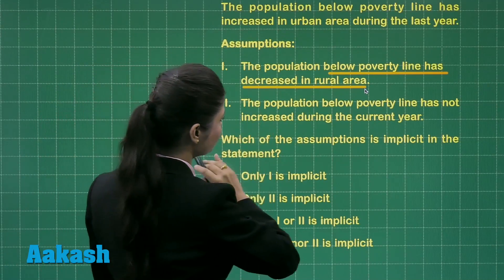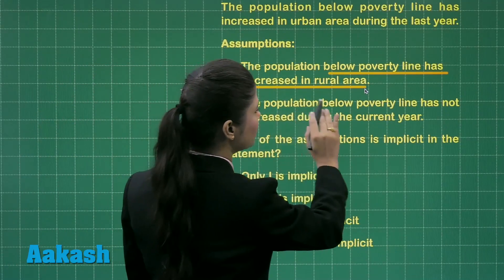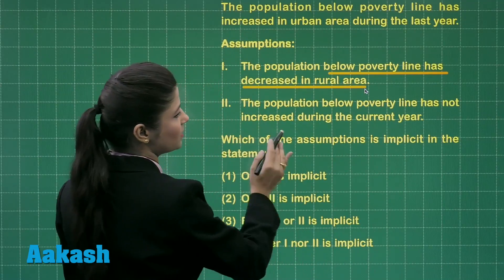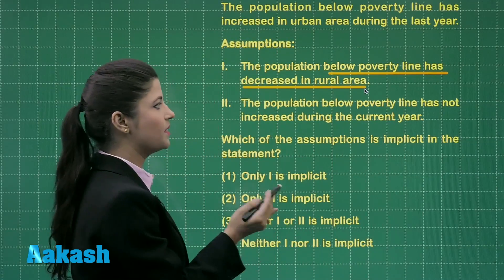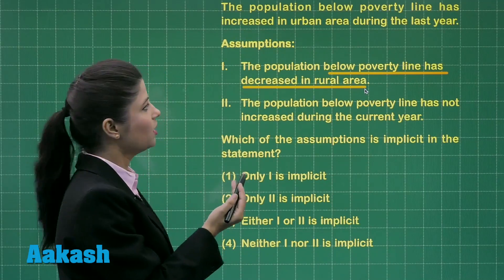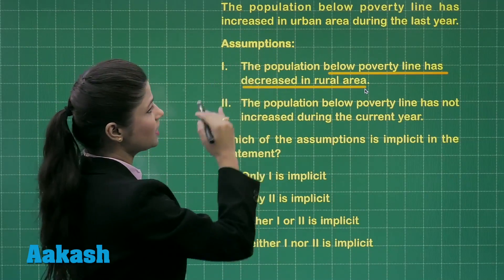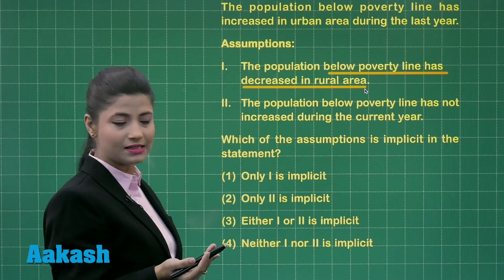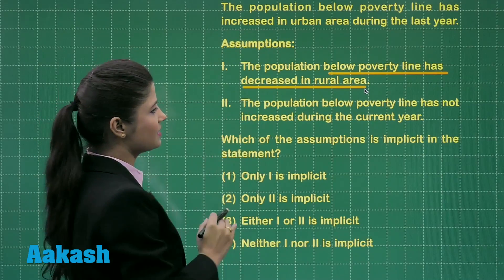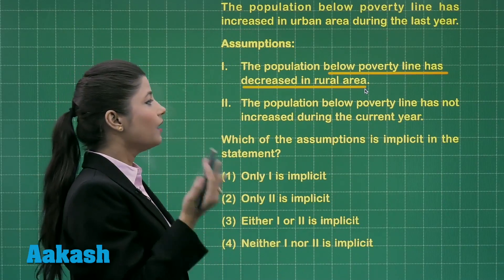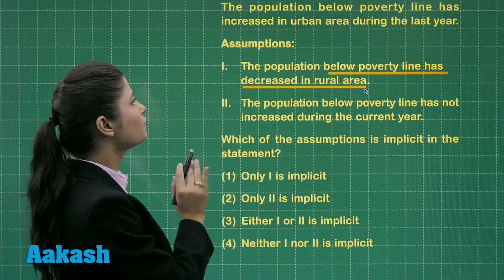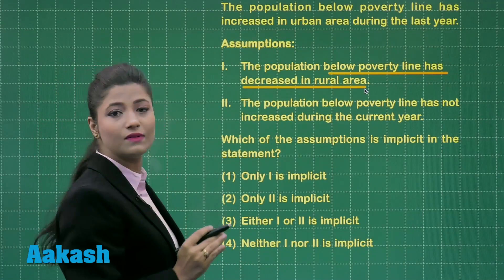Moving on to the second assumption: the population below the poverty line has not increased during the current year. This is completely contradicting the given statement, because the given statement says it has increased, and this assumption says it has not increased.